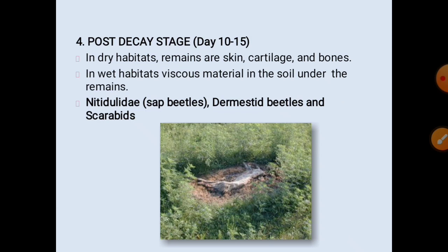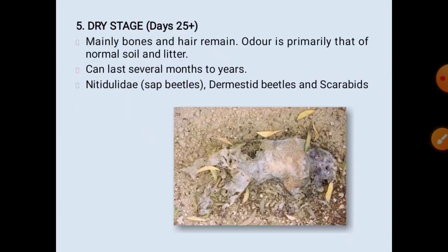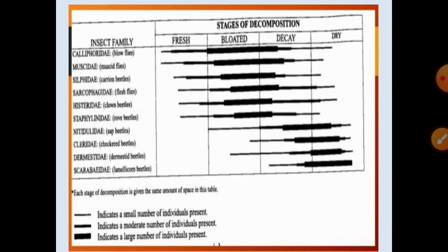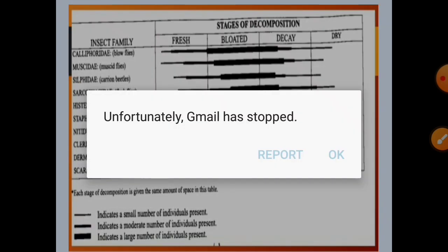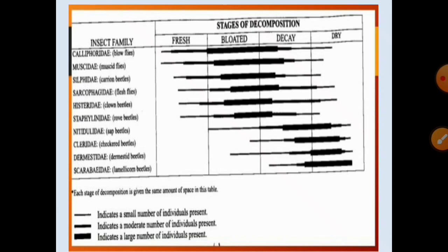The dry stage is more than 25 days: mainly bones and hair remain, the odor is primarily that of normal soil and litter, and this stage can last several months to years. Nitidulidae sap feeders, dermestid beetles, and scarabs are found at this stage. In summary, the stages of decomposition show distinct insect population patterns at each phase, as presented in the accompanying data.